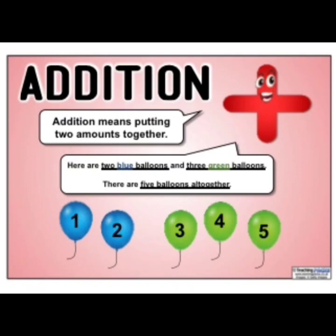Let's see one example. Here are two blue balloons and three green balloons. How many total balloons are there? Let's count. One, two, three, four, five. There are five balloons altogether.